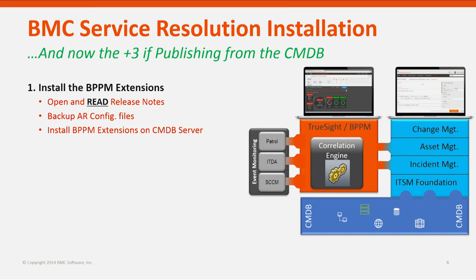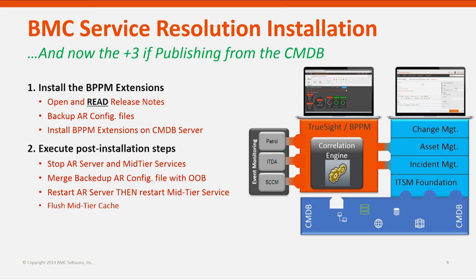Before you get started, make sure you do the basic things we talked about before: read the release notes and take a backup of the AR config files on the CMDB server. Once you've done those two things, you'll then run the CMDB BPPM extension installer. It's a wizard — it pops up, it prompts you for information to let it know where the TrueSight server is so that connection can be made. Once that's done, there's a set of post-installation steps that you'll want to follow, which are very well documented in the release notes.